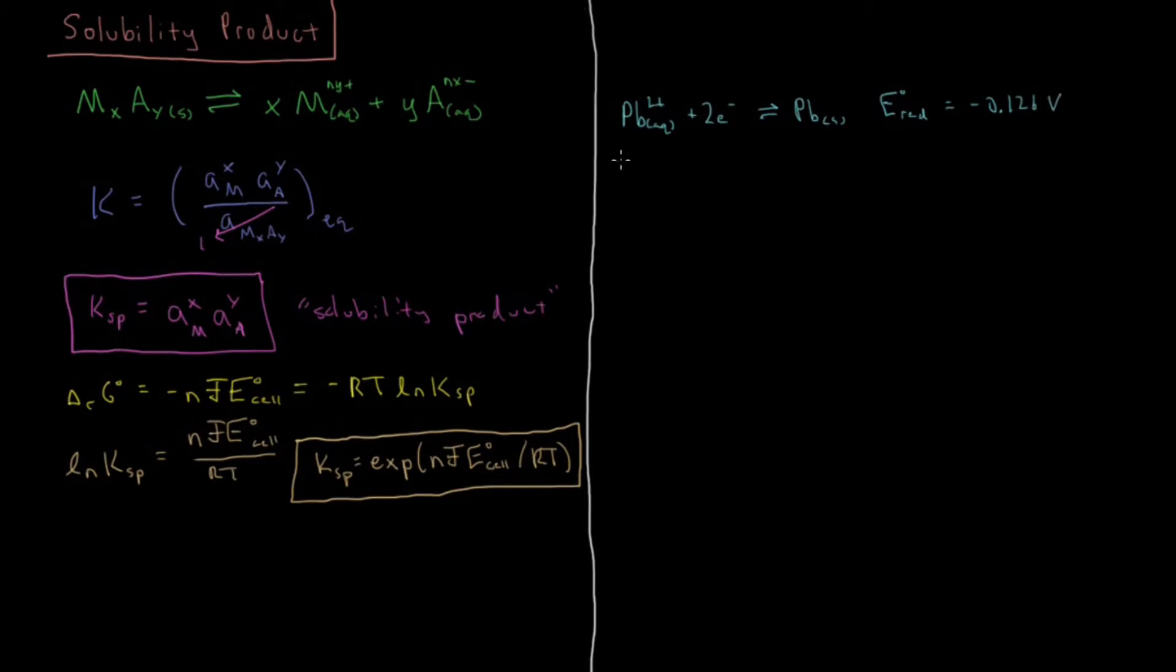And then there is another reaction we have where we have lead 2 iodide solid plus 2 electrons, and the standard reduction potential of that reaction is equal to minus 0.364 volts.